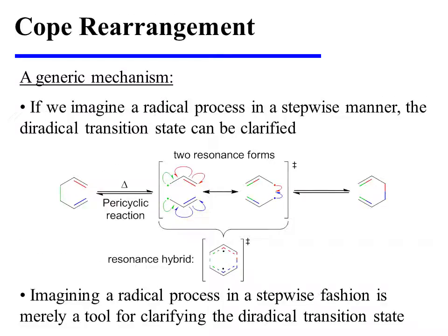The diradical transition state can be clarified if we imagine a radical process in a stepwise manner. For instance, we could envision the homolysis of the green sigma-bond. This would generate two allylic radicals, each of which can be drawn in an alternate resonance form. If these allylic radicals united, we would see the formation of the new sigma-bond in the product.